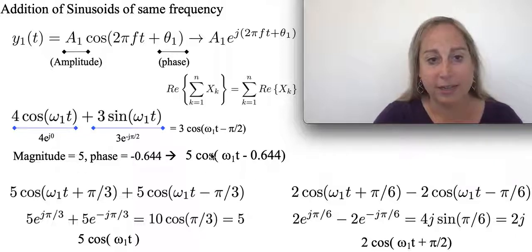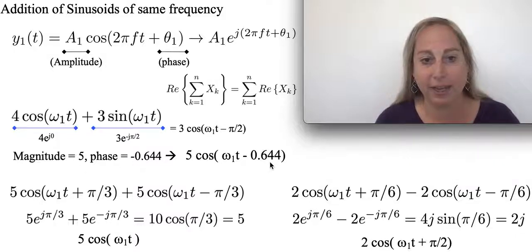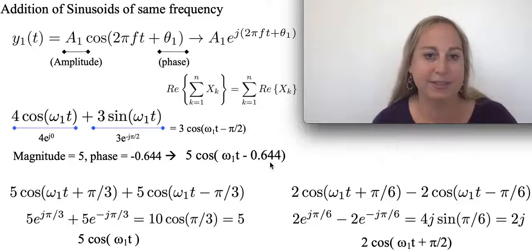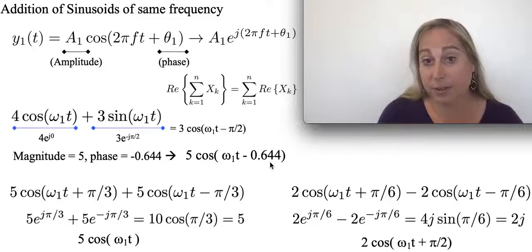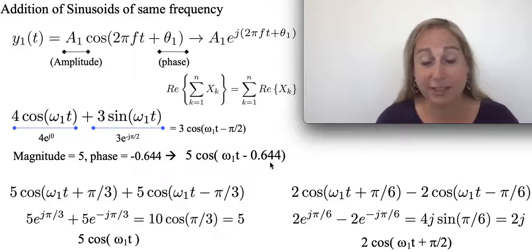As a result, I end up getting 5 cos(ω₁t - 0.644), which is a phase in between the two, which is kind of what you'd expect. That's cool.